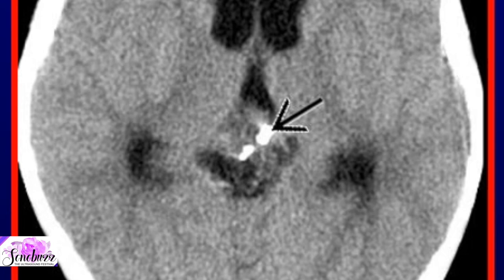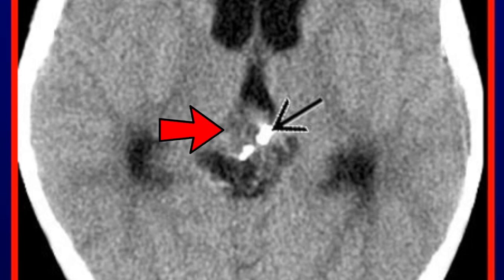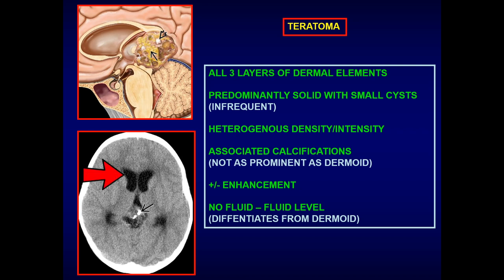The solid component in a teratoma will show enhancement. This lesion will truly have fat cells within it because it arises from at least two layers, including mesenchymal. On CT, we see a solid-slash-cystic mass lesion with areas of calcification situated in the pineal gland area causing obstructive hydrocephalus, probably due to compression of the aqueduct of Sylvius.